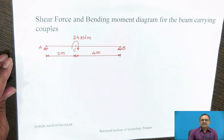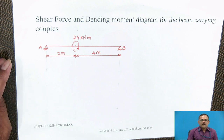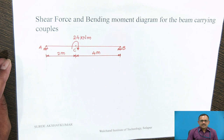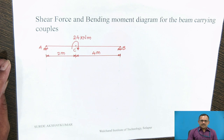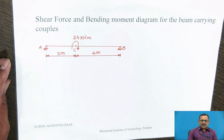Shear Force and Bending Moment Diagram for a beam carrying a couple. When the couple is acting on a section of a beam, there is a sudden change in the bending moment where the couple acts. The sudden change in the bending moment at the section where couple acts is equal to the magnitude of the couple acting at that section. At the section where couple acts, there is no change in the load, and therefore, the shear force value remains constant and the diagram will remain horizontal. The sudden change in bending moment can be calculated by determining the reactions at the supports as well as the bending moment at the section where the couple acts.